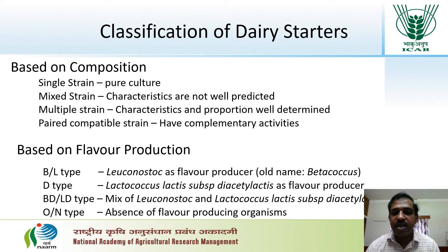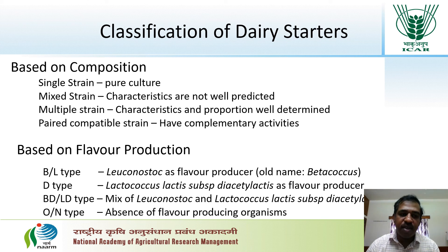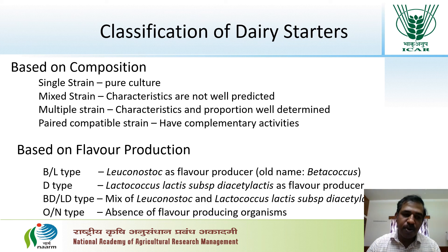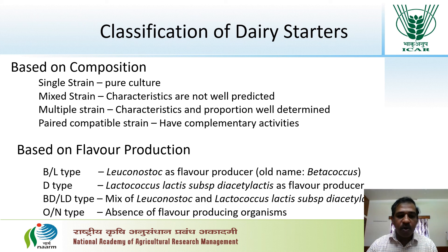Based on composition, dairy starters can be classified as single strain, mixed strain, multiple strain, and paired compatible strain. Based on flavor production, they are classified into BL type, D type, BDO type, L type, or N type. We will learn this classification in more detail in the coming class.